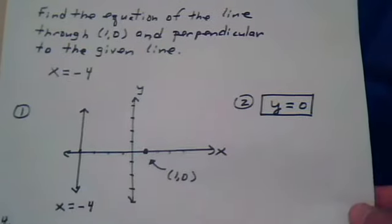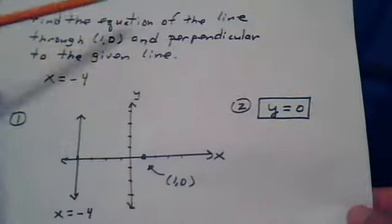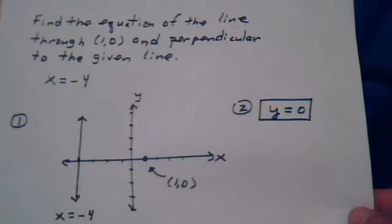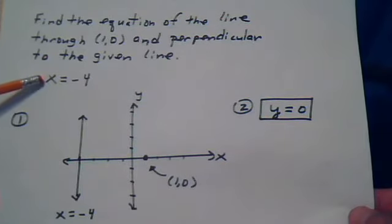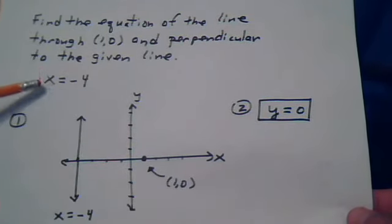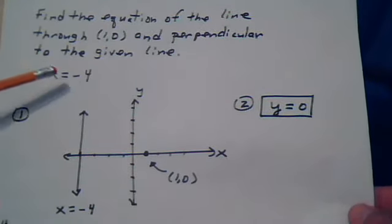Here's another problem. Find the equation of the line through this point and perpendicular to the given line. And this is the line they're giving us. And we would like to find another line that's perpendicular to this one and goes to this point. So the first step, go ahead and graph this line.